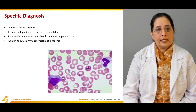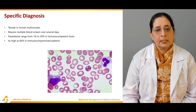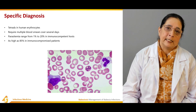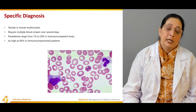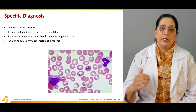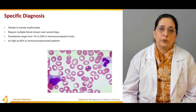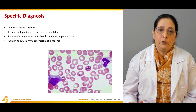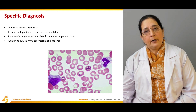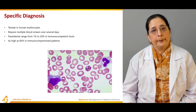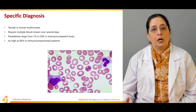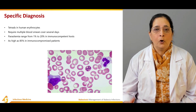Parasitemia can be as high as 85% in immunocompromised patients. Immunity is therefore very important — severe illness is less common in immunocompetent individuals compared to those who are immunocompromised.